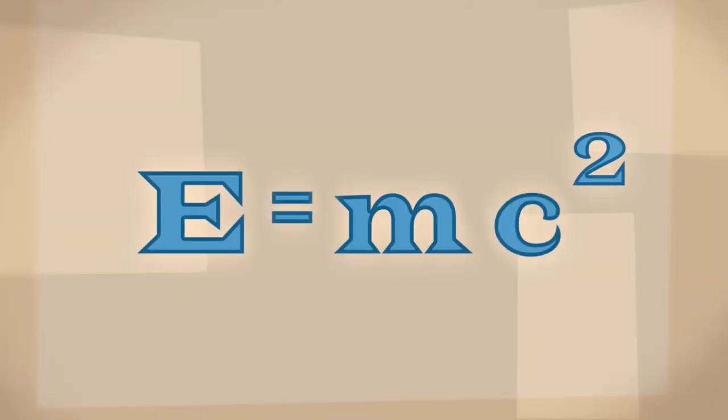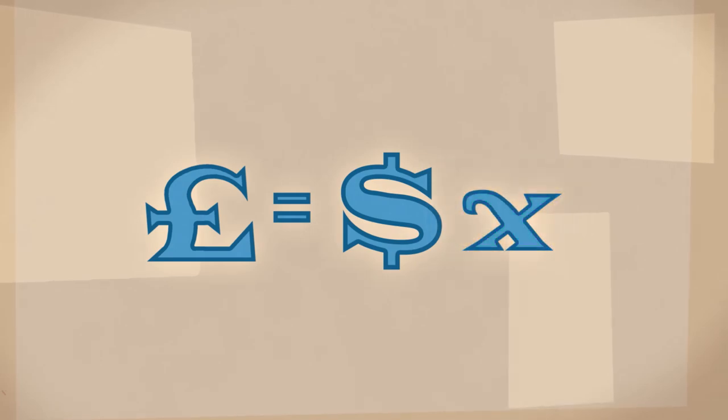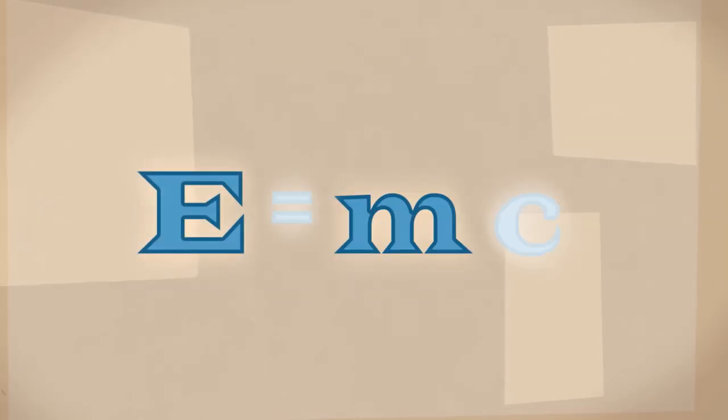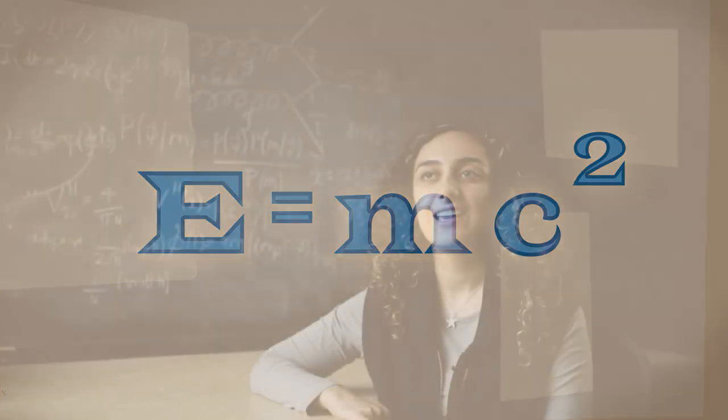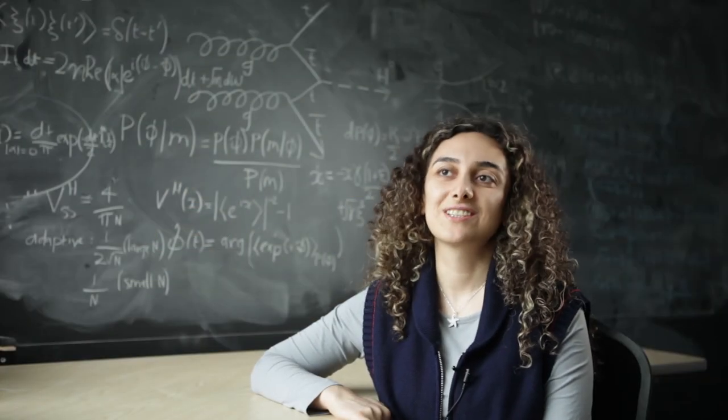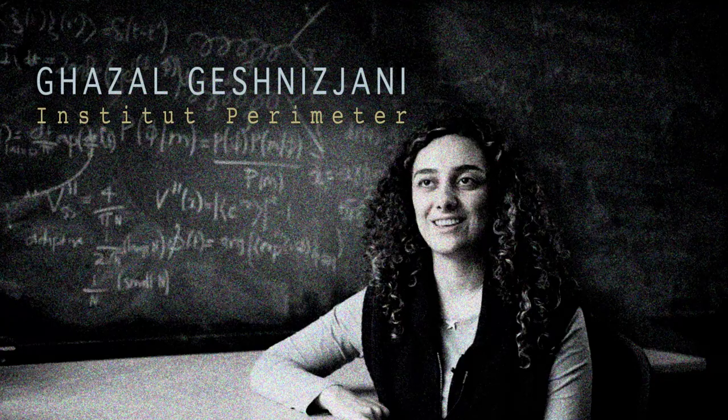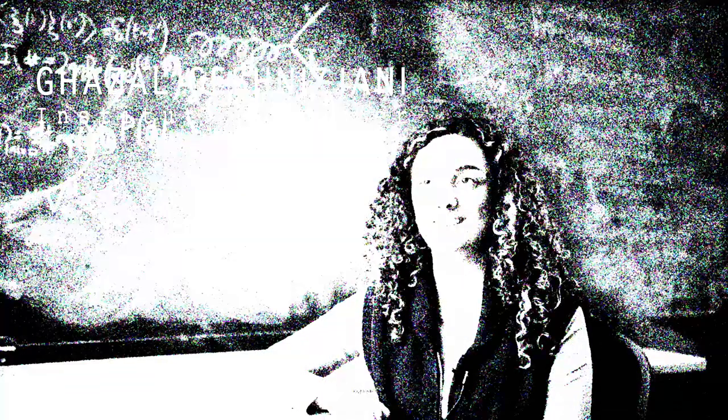La règle de base est E égale mc². Ce que ça veut dire, c'est que la masse et l'énergie peuvent être converties l'une dans l'autre, tout comme on peut convertir des livres sterling en dollars à un certain taux de change. Seulement, le taux de change entre l'énergie et la masse est c², la vitesse de la lumière au carré. La masse et l'énergie sont deux aspects du même phénomène. On ne peut pas distinguer l'une par rapport à l'autre.